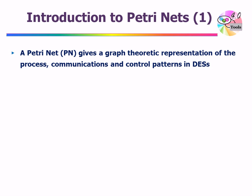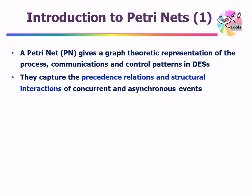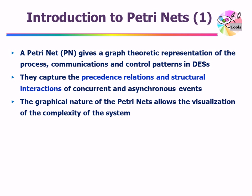Let's begin our introduction to Petri Nets. A Petri Net gives a graph theoretic representation of the processes, communications, and control patterns in discrete event systems. Petri Nets provide us with a language, a formalism to model discrete event systems. They capture the precedence relations and structural interactions of concurrent and asynchronous events. The graphical nature of Petri Nets allows us to visualize the complexity of the system, so models done in Petri Nets will be drawn as graphs, and that graph structure will help us capture the complexity of the system.